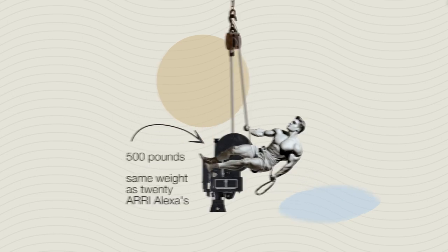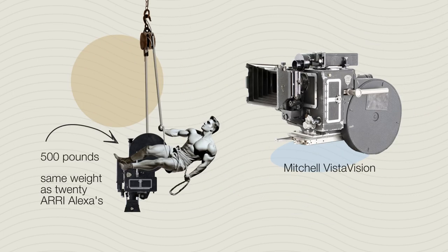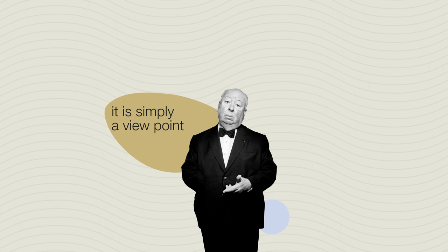The camera used in Vertigo was the Mitchell VistaVision camera. Hitchcock suggested that since there are no characters in the scene and it's simply a viewpoint, they could create a miniature of the stairway and lay it on its side. A fun fact: Ehrman Roberts, the person who achieved this shot, didn't even receive an on-screen credit for the film.